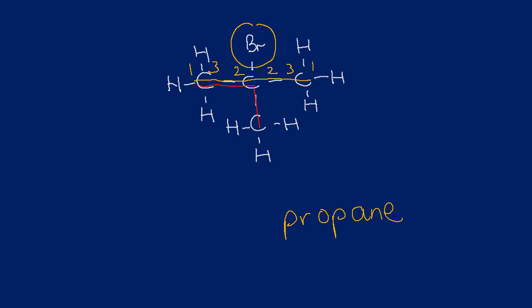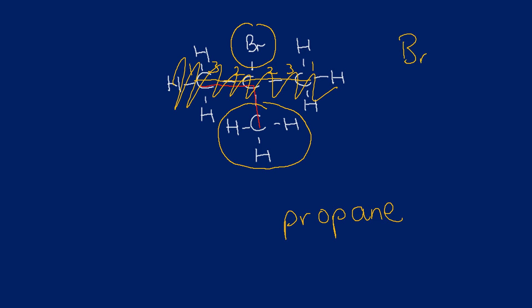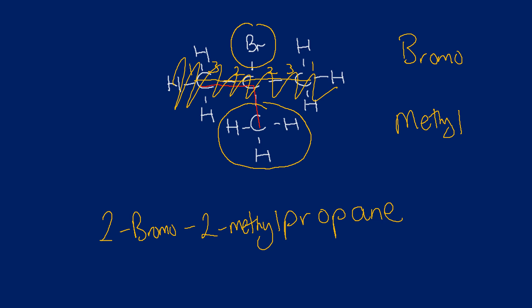The propane backbone has two extra groups attached: a bromine group and a methyl group. So we have a bromo and a methyl. Both appear on carbon number two, so we call this 2-bromo-2-methylpropane. Strictly speaking, groups go in alphabetical order — 'b' comes before 'm' — so it's 2-bromo-2-methylpropane.